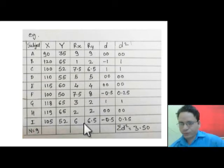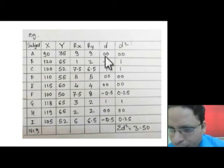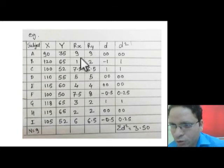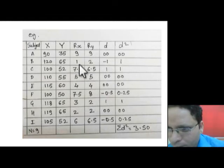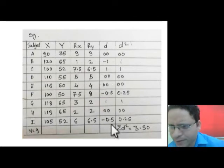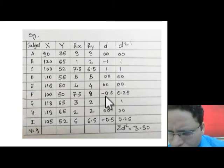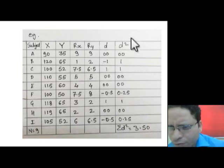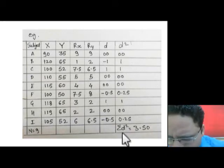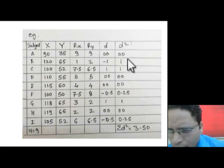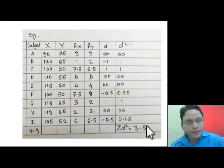Now we make the D column. D is simply Rx minus Ry. For example, 9 − 9 = 0, then 1 − 2 = −1, then 7.5 − 6.5 = 1, and so on for all rows. The D² column is the square of each D value: 0² = 0, 1² = 1, 0.5² = 0.25, and so on. We then add all D² values to get Σd² = 3.50.